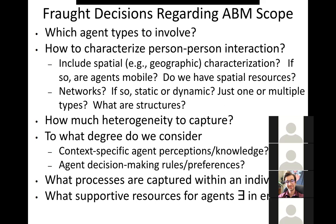When considering agent-based models, there are a lot of questions you have to consider carefully upfront. What agent types do we involve? How are we going to characterize the person-to-person interaction? How much heterogeneity do we want to capture? Heterogeneity means the diversity of characteristics between things. You can easily add into a person-agent an age, sex, ethnicity, hair color, education level, income level — just keep adding these things. But if you haven't really gained anything from them, what is the cost? It's not obvious.